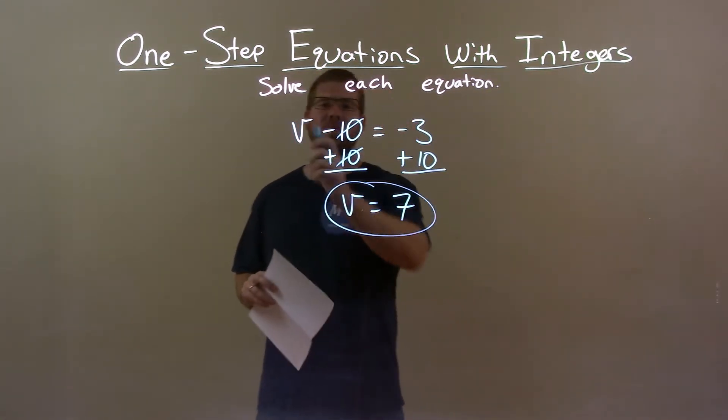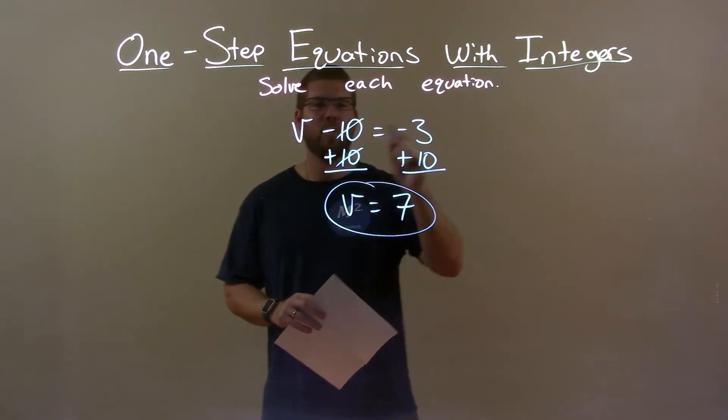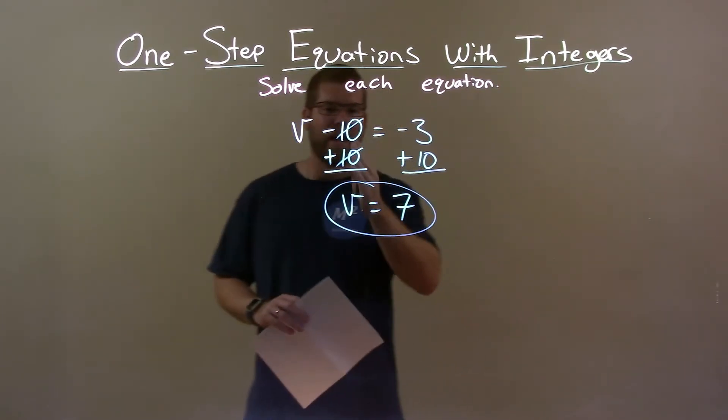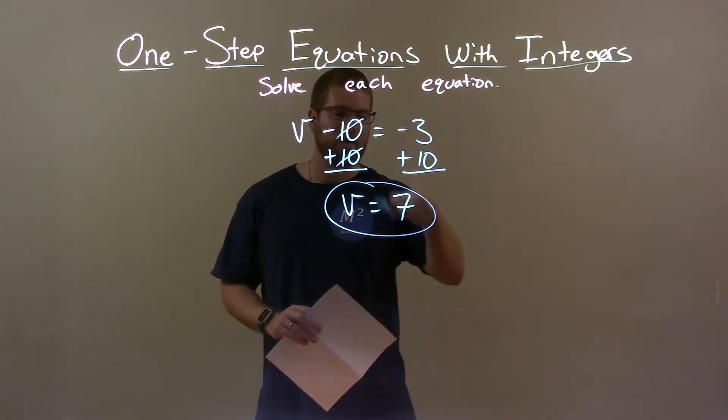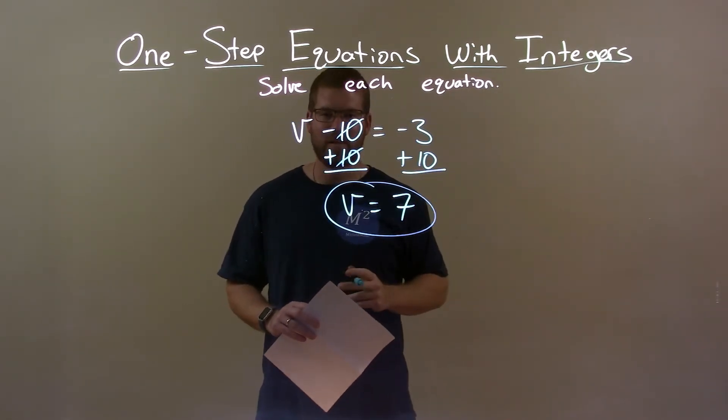Quick recap. We have v minus 10 equals negative 3 and we have to solve for v. I added a 10 to both sides. That got me v by itself. And negative 3 plus 10 became 7. So my final answer here is 7.